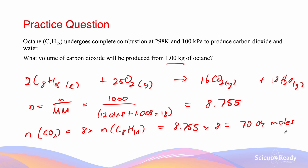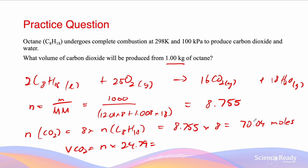Since Avogadro's law tells us molar volume is constant for ideal gases at the same conditions, the volume per mole at RTP is 24.79 liters. To find the volume we multiply moles by molar volume: V of CO2 = 70.04 × 24.79 = 1740 liters, to three significant figures.